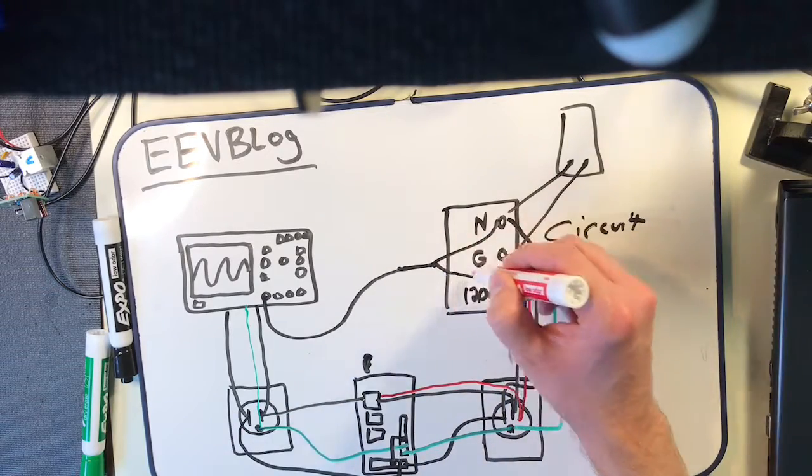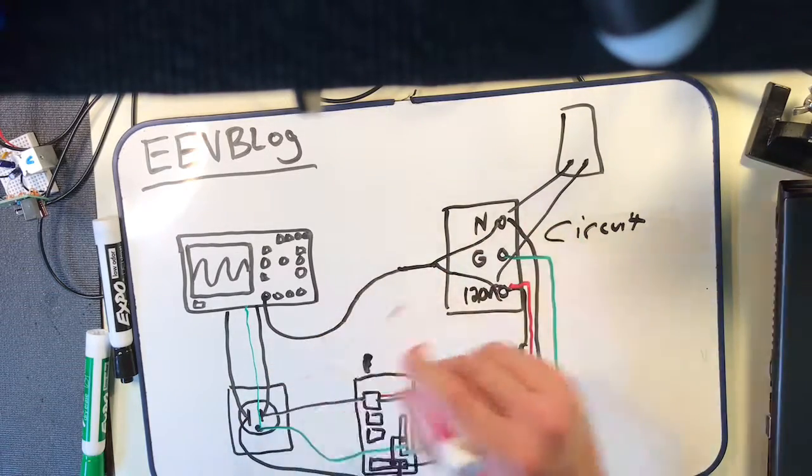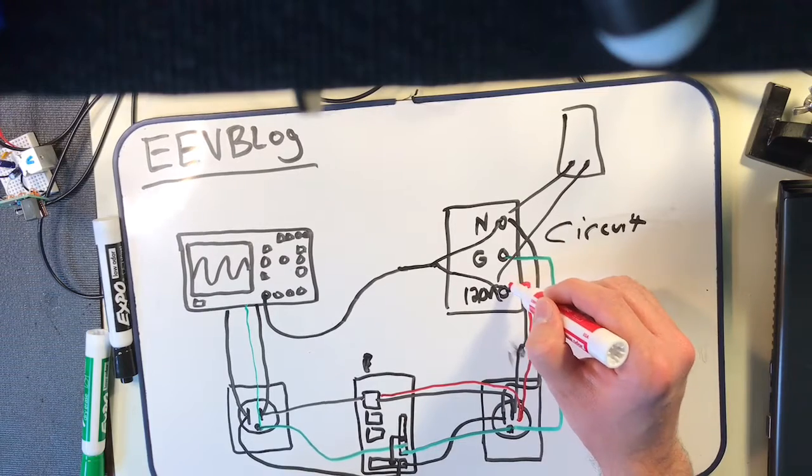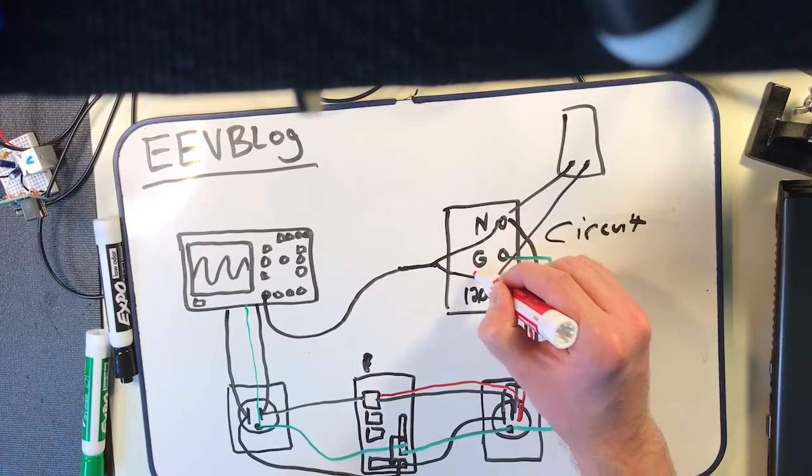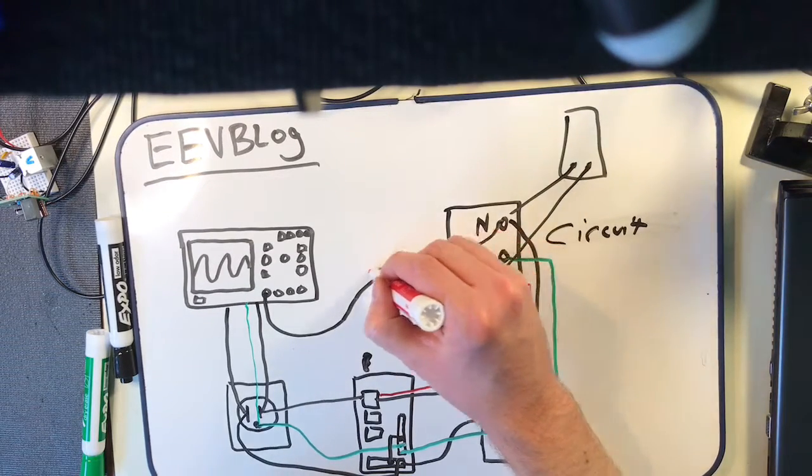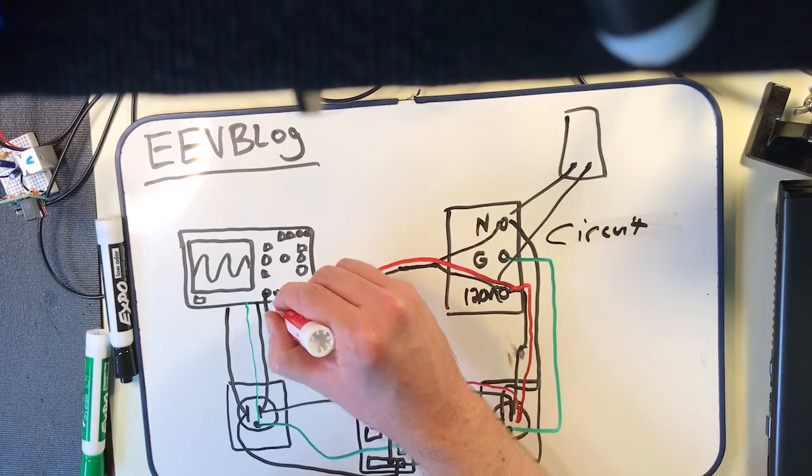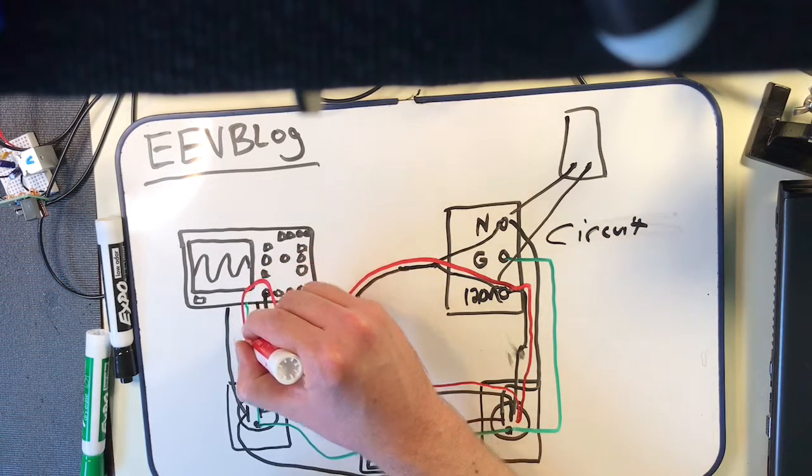Now what'll happen is, because this alligator clip has such a low resistance, a low impedance, the electricity will go through the ground clip, through the probe for your oscilloscope, into your oscilloscope, through the outlet from the oscilloscope.